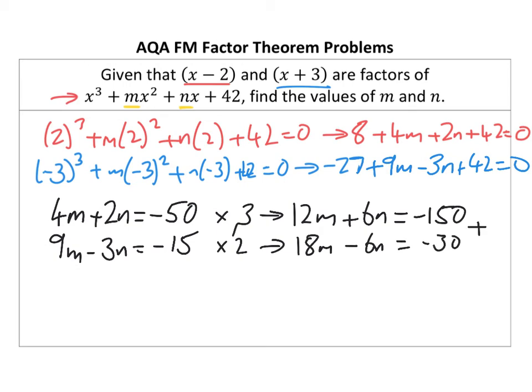Add them up, the Ns will disappear. I end up with 30M equals negative 180. So M equals negative 6.